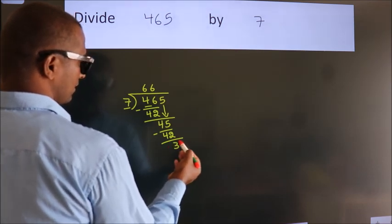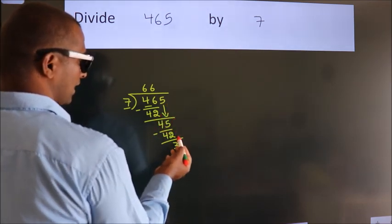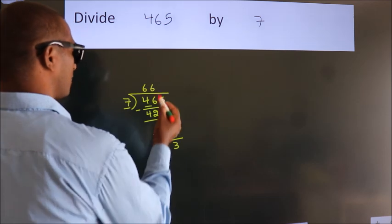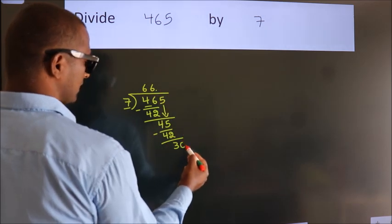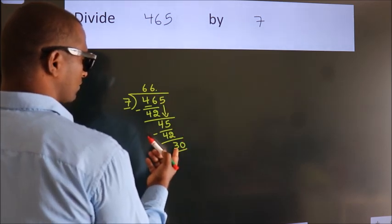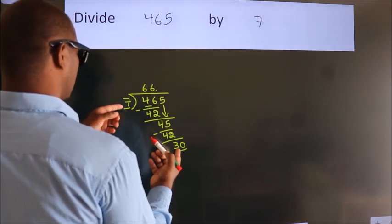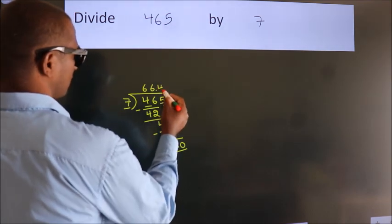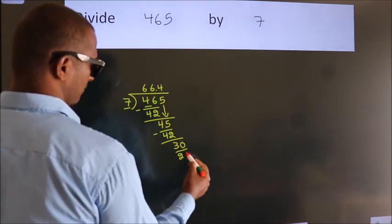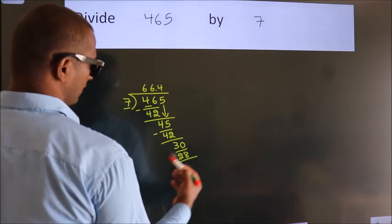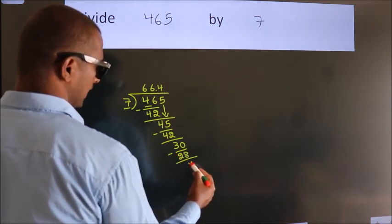After this, no more numbers to bring down. So, what we do is put a dot and take 0. So, 30. A number close to 30 in the 7 table is 7×4, 28. Now, we subtract. We get 2.